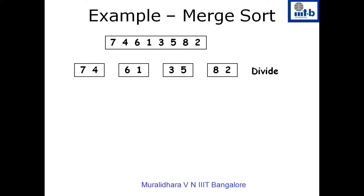If you have to sort a sequence like seven and four, we divide it in half, then try to combine. When combining seven and four — when there are only two numbers it is easy — you first write the smaller number and then the bigger number. So sorting seven and four recursively gives us four and seven. The second pair becomes one, six; the third remains three, five; and the fourth becomes two, eight.